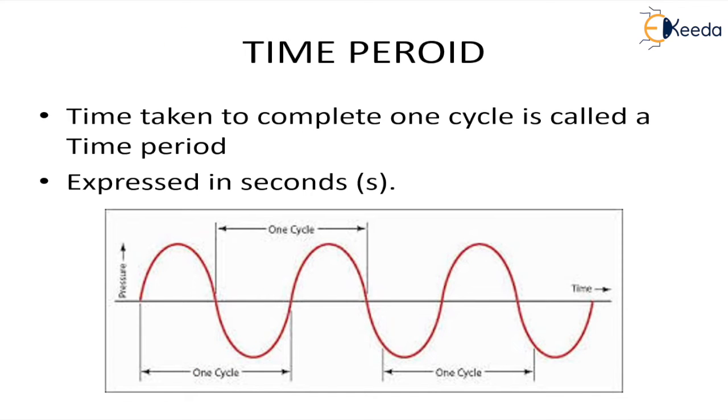The first term is the time period, or it can also be called period. It is the time in terms of seconds, and it is the time taken to complete one cycle. Here we can see this is the complete cycle.